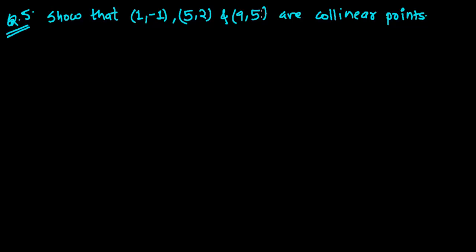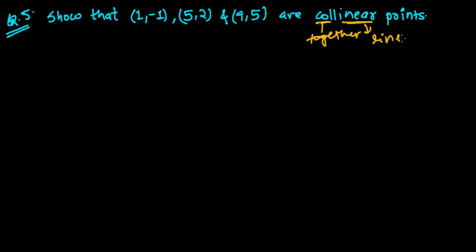Before processing the problem, we should know what collinear points are. Those points are called collinear which come under the same line. 'Co' means together, 'linear' means a line — so collinear means together in a line.